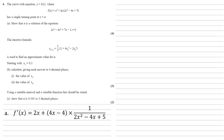Differentiating f of x, we get the following. For x squared, the differential is 2x by bringing the power down. The natural log is a little trickier, but using the chain rule, we differentiate the function inside the log: 2x squared minus 4x plus 5 becomes 4x minus 4, and we multiply that by 1 over 2x squared minus 4x plus 5. Simplifying, we get 2x plus (4x minus 4) over (2x squared minus 4x plus 5).